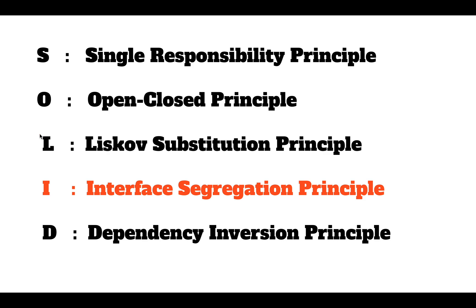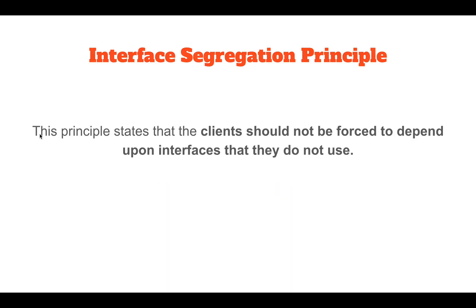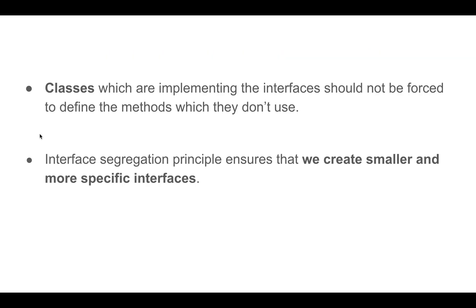Let's start today's video with the Interface Segregation Principle. This principle states that clients should not be forced to depend upon interfaces that they don't use. The clients here are the classes which are implementing the interfaces. In other words, classes implementing interfaces should not be forced to define methods which they don't use. The main goal of this principle is to reduce side effects of using larger interfaces by breaking them into smaller and specific interfaces, which define specific or exact behavior. We should always create smaller and more specific interfaces instead of creating big or fat interfaces where we put a lot of unrelated behaviors or methods.